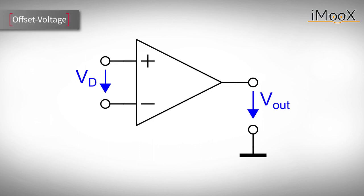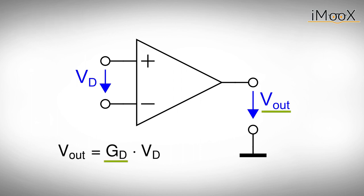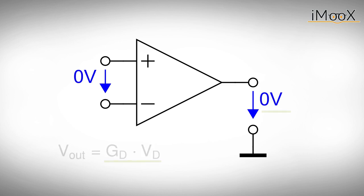Let's start with the offset voltage. As we have learned in one of our previous videos, the output voltage Vout equals the differential gain Gd times the differential input voltage Vd. If we apply the same voltage to the inverting and non-inverting input, or simply short-circuit the two inputs, the differential input voltage is zero volts. Consequently, an ideal operational amplifier would give us an output voltage Vout of zero volts.